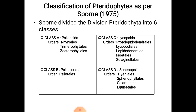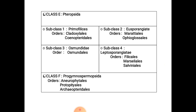Class B is the Psilotopsida, which includes only 1 order, Psilotales. Class C is the Lycopsida, which includes 5 orders: Proto-Lepidodendrales, Lycopodiales, Lepidodendrales, Isoetales, and Selaginellales. Class D is the Sphenopsida, which includes 4 orders: Hyeniales, Sphenophyllales, Calamitales, and Equisetales. Class E is the Pteropsida, which includes 4 subclasses.